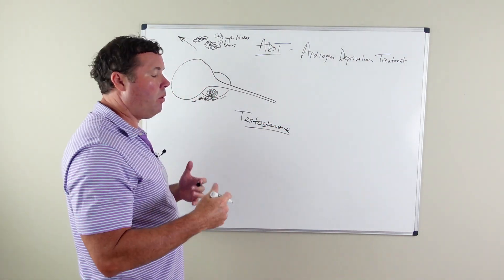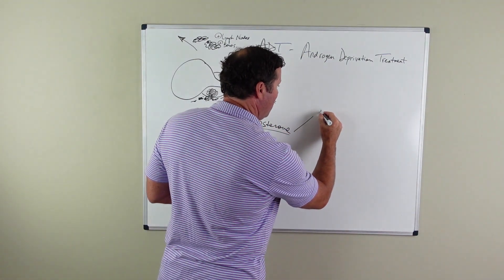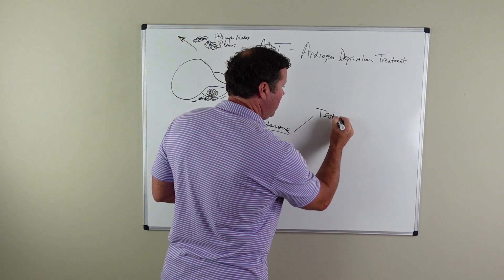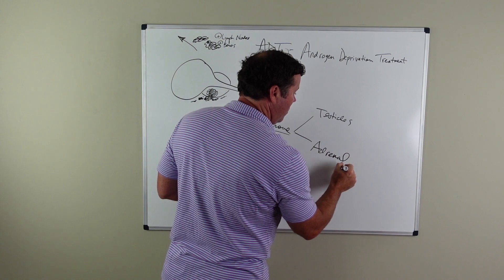Testosterone is the male hormone that is produced by two areas of the body. One, it's produced by the testicles, and it's also produced about 10% by the adrenal glands.